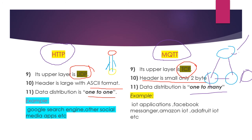MQTT is used mainly in IoT applications — it was developed to meet IoT needs. Facebook Messenger uses MQTT because chat involves only small messages, audio, or text. Amazon IoT is a recent development using MQTT, and Adafruit has also developed an IoT platform using it. All those companies are using MQTT because its throughput is high, overhead time is low, and it meets real-world IoT needs.